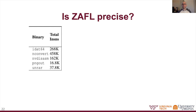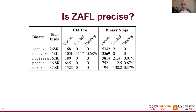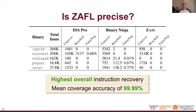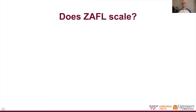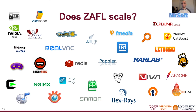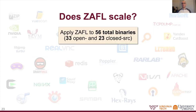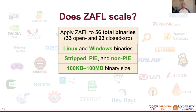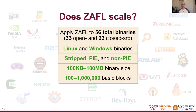Examining Zaful's precision next to commercial binary analysis tools IDA and Binary Ninja, Zaful achieves the highest overall instruction recovery, with none of the instructions it deemed unreachable actually being reached by fuzzing, and a mean control flow graph coverage accuracy of almost 100% compared to compiler instrumentation. In testing whether Zaful scales to real binaries, we applied it to open source, closed source, and Windows binaries. Overall, we confirmed Zaful's success on 33 open source and 23 closed source binaries, both Linux and Windows formats, stripped, position-independent, and non-position-independent executables, ranging from 100 kilobytes to 100 megabytes in size and 100 to 1 million basic blocks.